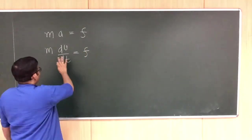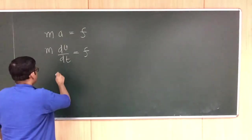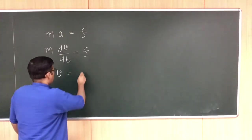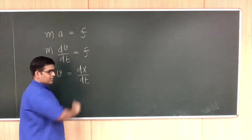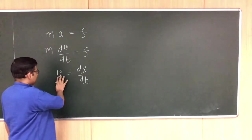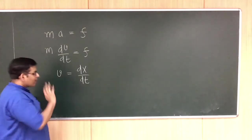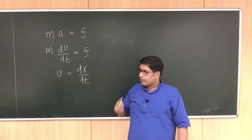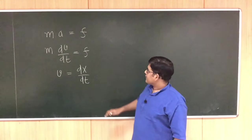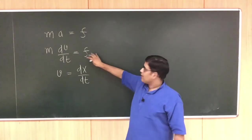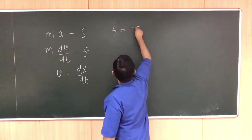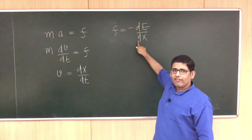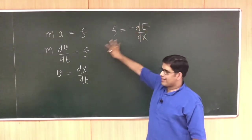We know that velocity itself is the rate of change of position — how much the position changes in unit time. So to solve Newton's equation, we have to solve two equations: m dv/dt = F and v = dx/dt. Here the force is nothing but the derivative of energy — how does the energy change if we change the position? This force is related to energy, as we already said.